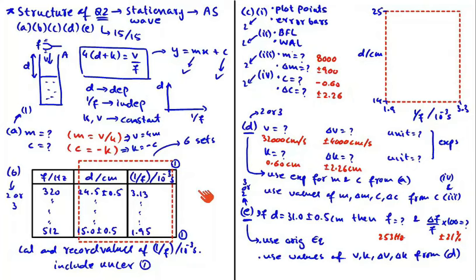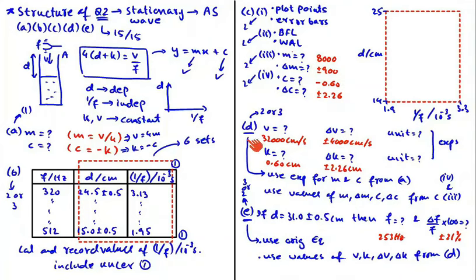It is very important that you know and fully understand the structure of the graph question, because it saves you time and you never feel lost. For example, when doing part D, if you know that we always use expressions from part A and values from parts C3 and C4, you will go straight there without panic. Similarly, when doing part E, knowing that we use the original equation and values from part D means you will proceed directly and efficiently.